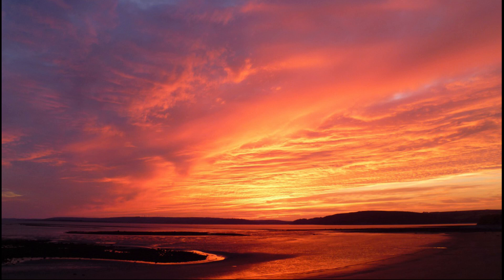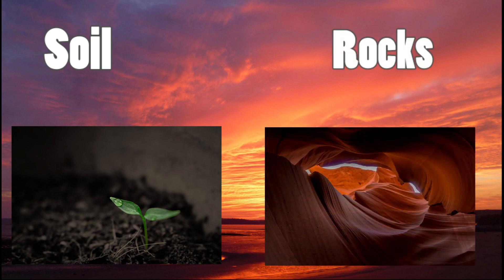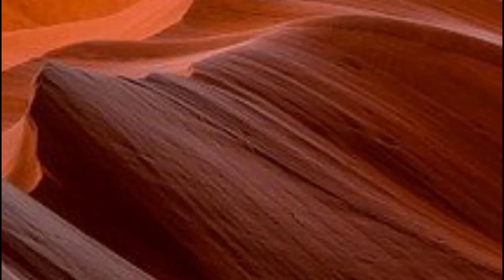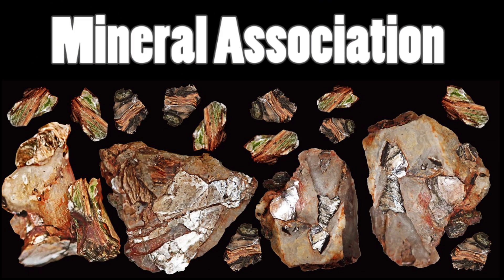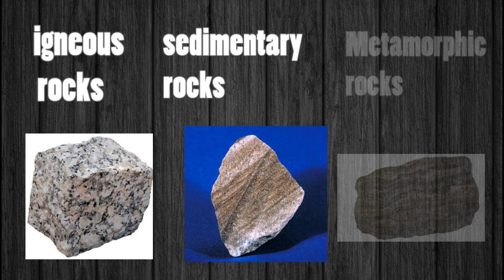The earth's surface is made up of different materials, including soil and rocks. A rock can be defined as a solid which originates naturally and is composed of a combination of inorganic minerals. Depending on the association of minerals, rocks will have a different composition and therefore a different origin. The best known rock classification divides rocks into three types: igneous or magmatic rocks, sedimentary rocks, and metamorphic rocks.